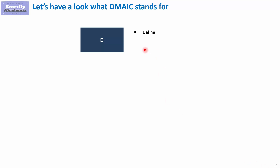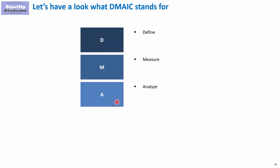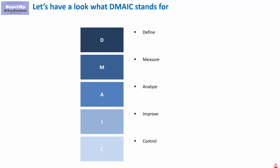D stands for Define — this is where we define what we actually want to do. M stands for Measure. A for Analyze — here we try to discover the root cause of the problem. In the next stage, the Improve stage, we try to improve it. And finally, C stands for Control.